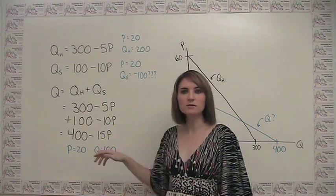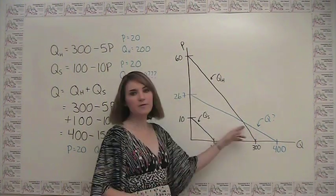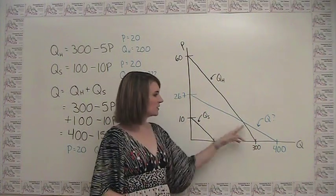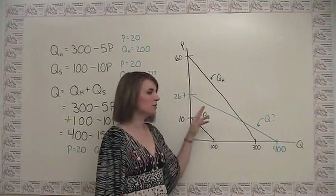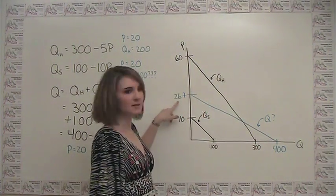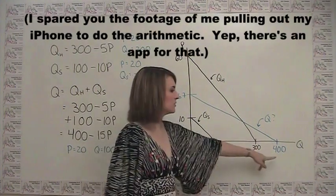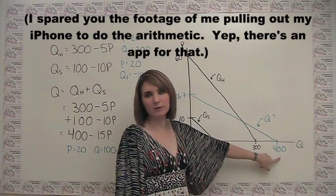So, okay, that sounds good. We'll go over here and graph that guy. And that looks like this blue line here with an intercept on the p-axis of 26 and 2 thirds and an intercept on the q-axis of 400.